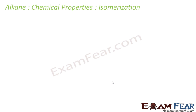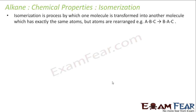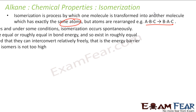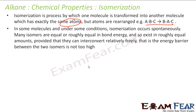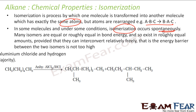Now we will talk about isomerization of alkanes. Isomerization is a process where one molecule is transformed into another molecule with exactly the same molecular formula — same atoms but arranged in a different way. For example, ABC becomes BAC. This happens to lower the energy. If you have two different isomers, isomerization gives the one with lower energy.